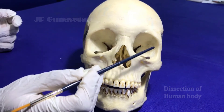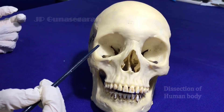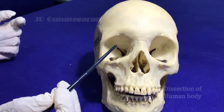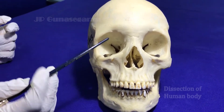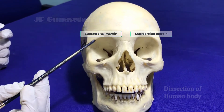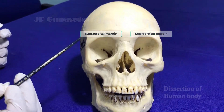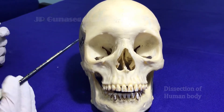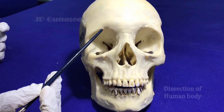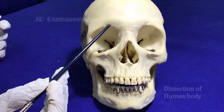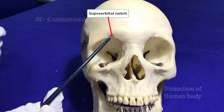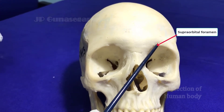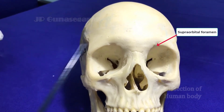In the norma frontalis we can see a pair of orbital openings which are quadrangular in shape, lodging the eyeball and associated structures. They have four margins. The supraorbital margin is formed entirely by the frontal bone, and at the junction of the lateral two-thirds and medial one-third there is a notch called the supraorbital notch.